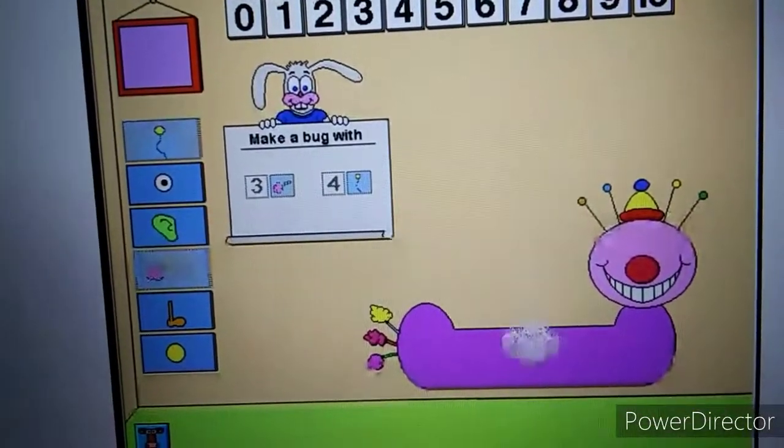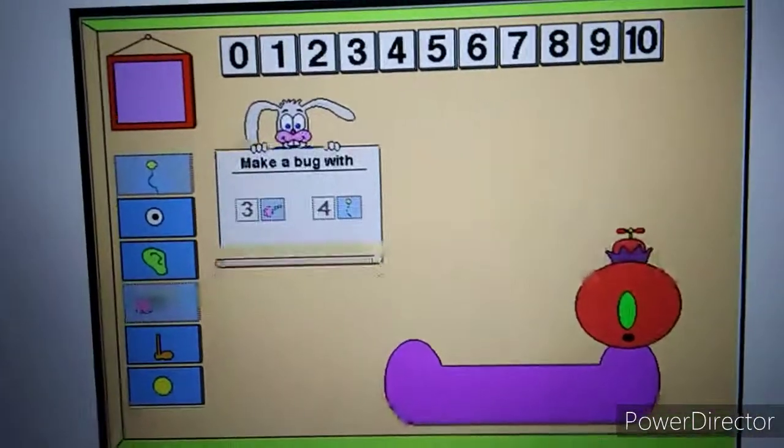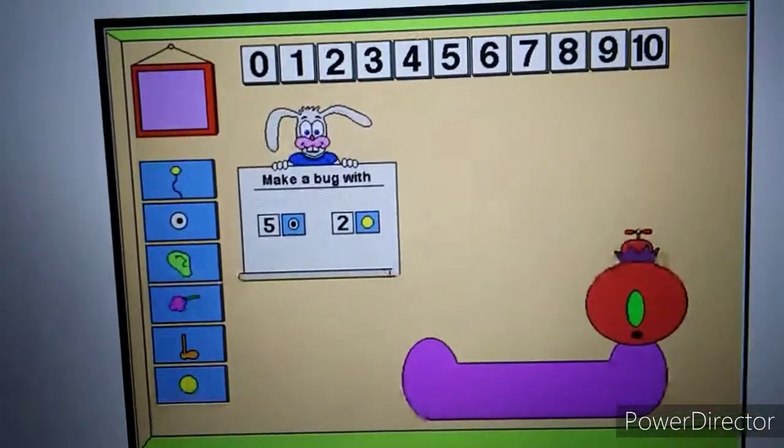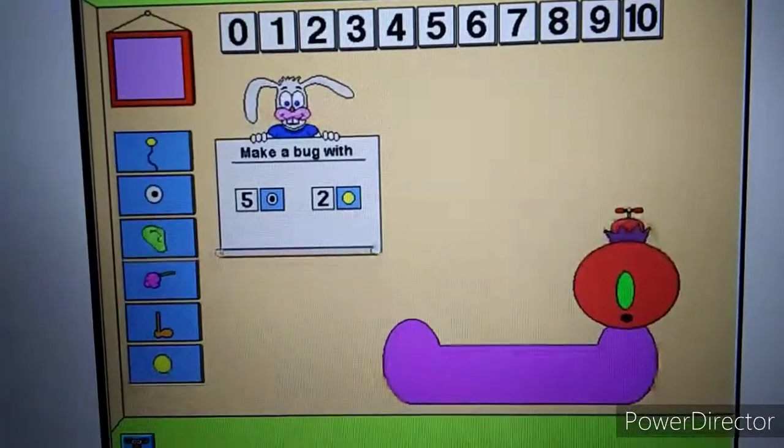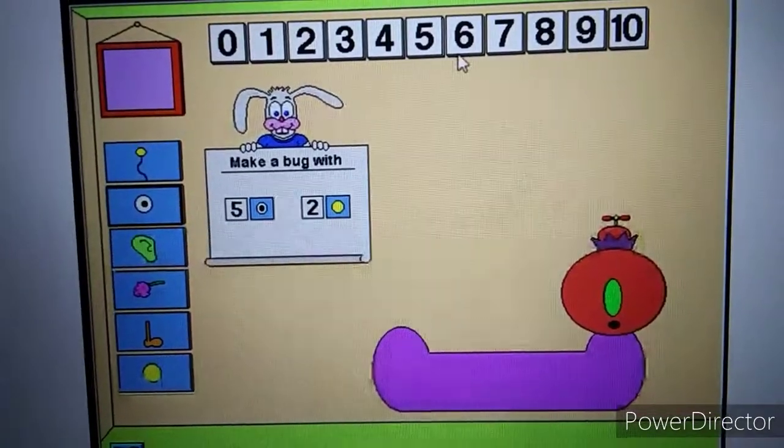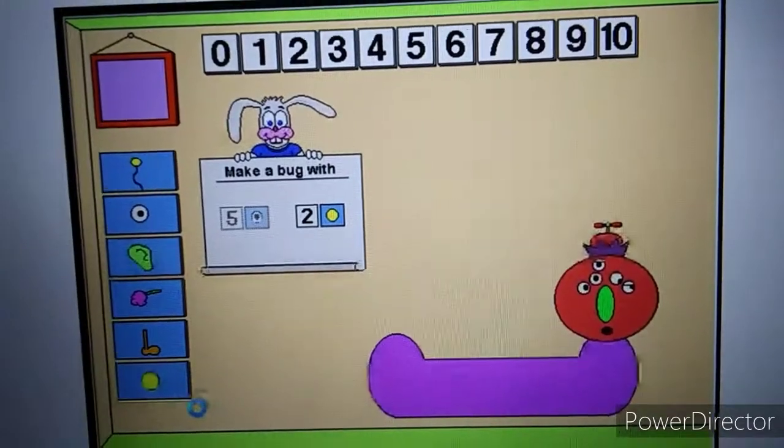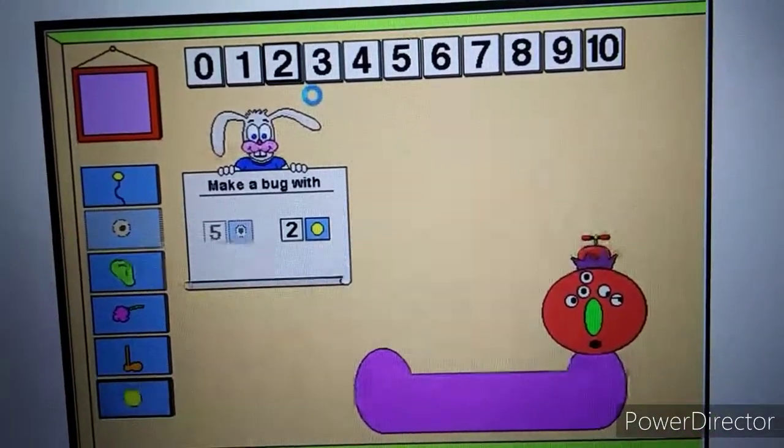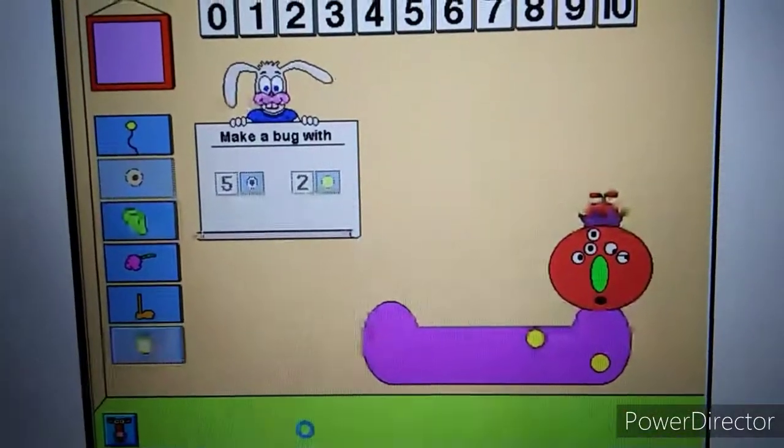Nice bug. Make a bug with five eyes and two spots. Eyes. Five eyes. Spots. Two spots. Awesome.